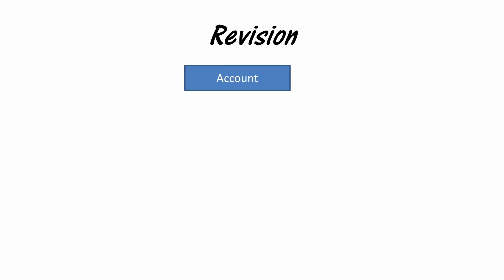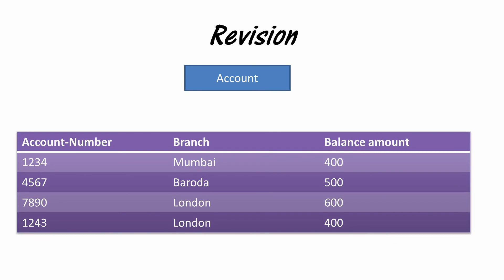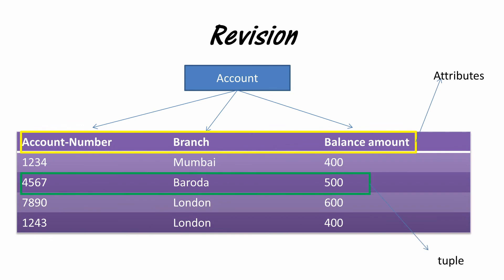To revise: a relational database is a combination of multiple tables which can be stored individually as files. The account number, branch, and balance amount are the three attributes of the account. A row is a unique combination of related information for a particular entity, and that is called a tuple. Finally, a domain is a list of similar-type information of the same data type. These are the three main important parts of a relational database.